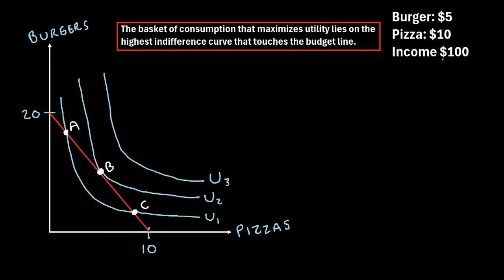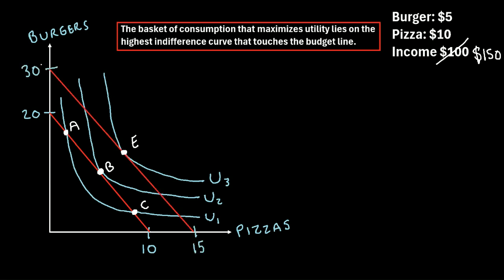Now let's consider the scenario where our income changes. Let's say our income increases from $100 to $150. In this case, if we spent all of our money on burgers, we could buy 30 burgers. And if we spent all of our money on pizza, we could now buy 15 pizzas. So our entire budget constraint is going to shift outwards.